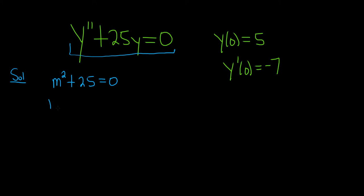To solve this equation, we subtract 25 from both sides to get negative 25, then take the square root. So we get m equals plus or minus 5i.